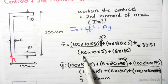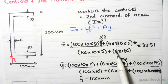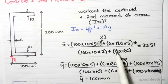And we divide by the sum of the areas. So 100 times 10 times 2 because there's two lots of flanges plus 6 times 180 which is the area of the web.